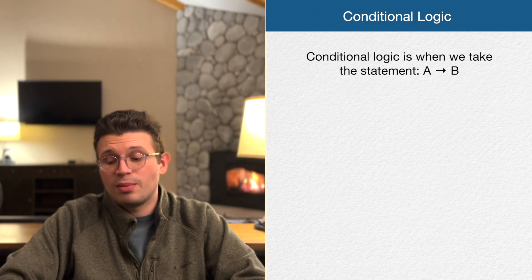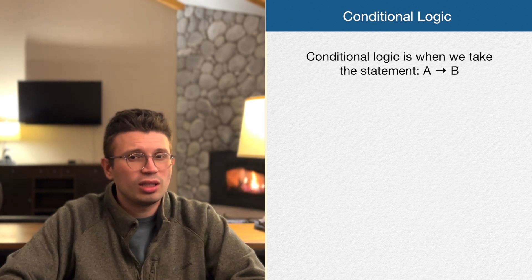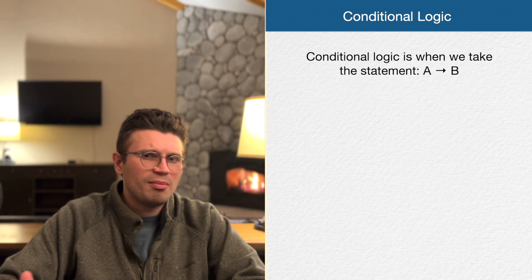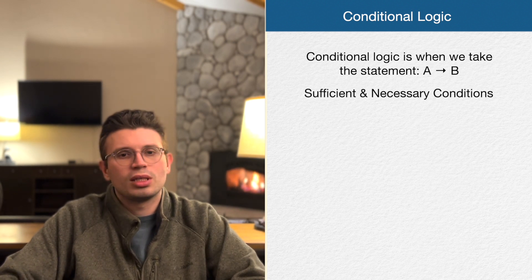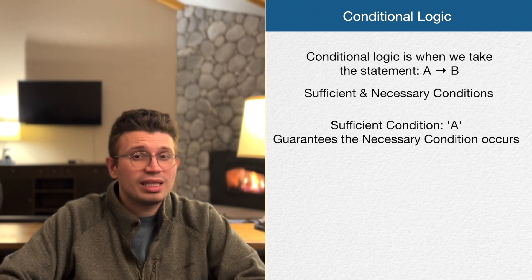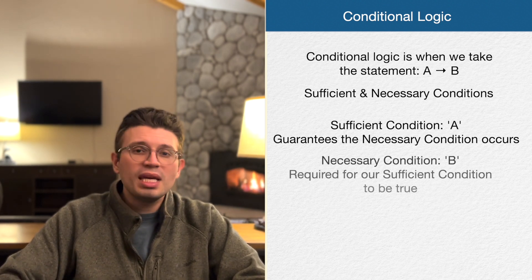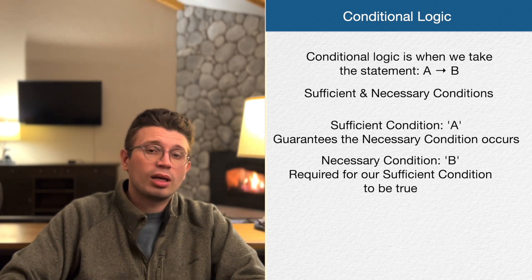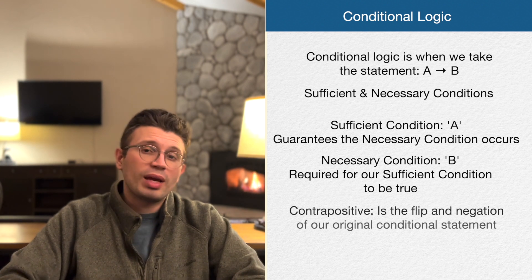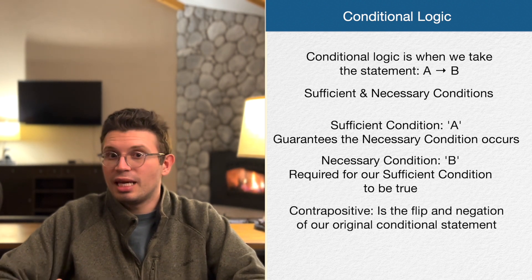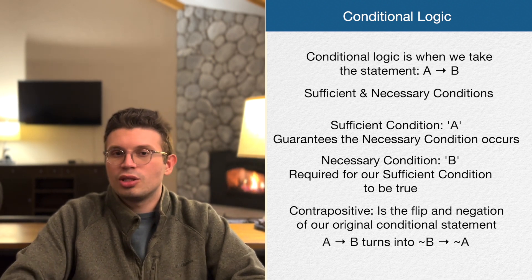Because of the nature of must be true questions, conditional logic fits perfectly within them — and that's also true of sufficient assumption questions covered in a later lesson. Conditional logic is the statement 'if A then B.' Within that, we have two elements: the sufficient condition and the necessary condition. A is our sufficient condition — it's enough to guarantee something. B is our necessary condition — it's required in order for the sufficient condition to be true. Then we have our contrapositive: if A then B turns into if not-B then not-A.